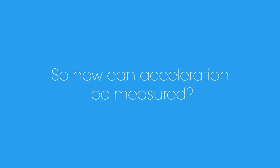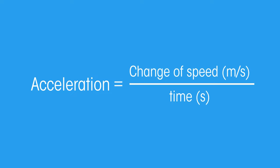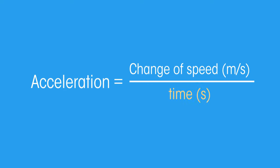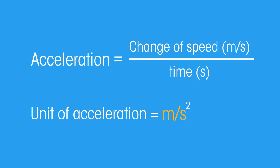So how can acceleration be measured? Since acceleration is the rate at which an object changes its speed, you can say that acceleration is the change of speed over time. The unit of acceleration is meters per second squared.